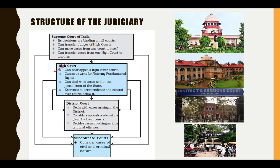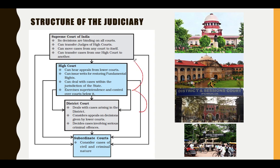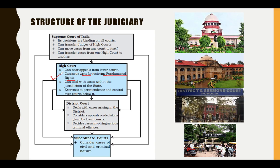Now looking at the High Court: if you have a case at the district court or subordinate court level, you can appeal upward. Unless there is a fundamental rights violation, you go to the High Court first. But if there is a fundamental rights violation, you have the option to go directly to the Supreme Court, bypassing the High Court. The High Court also hears appeals from lower courts — district courts and subordinate courts. It can issue writs for restoring fundamental rights.